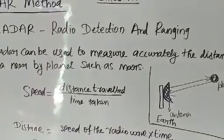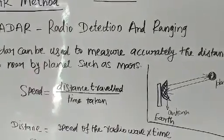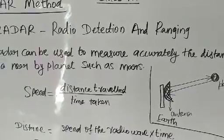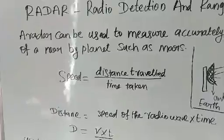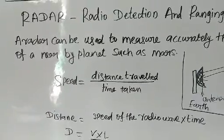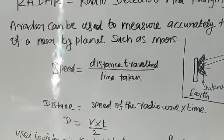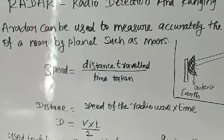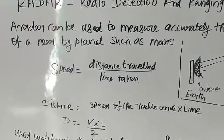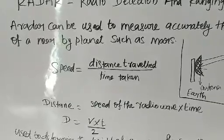Note down the time t. Speed equals distance traveled by time taken. Distance equals speed of the radio wave times time. So d equals v times t by 2.